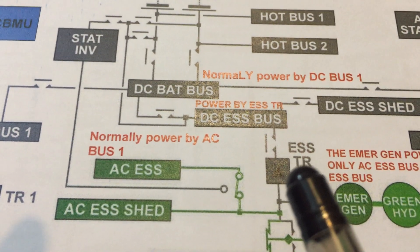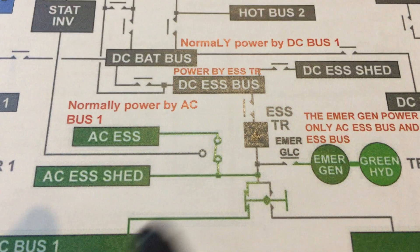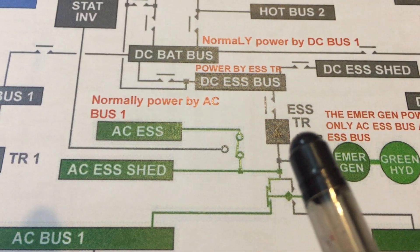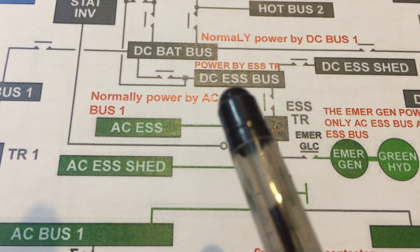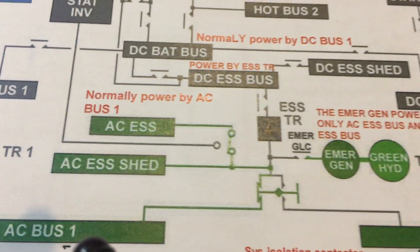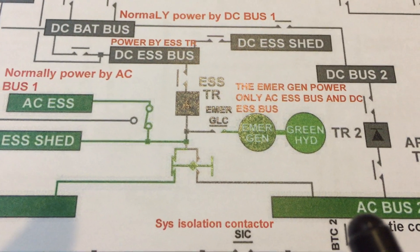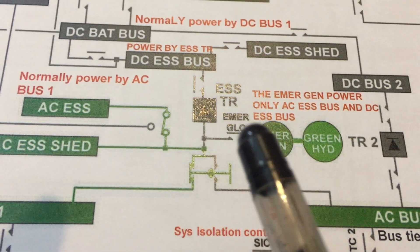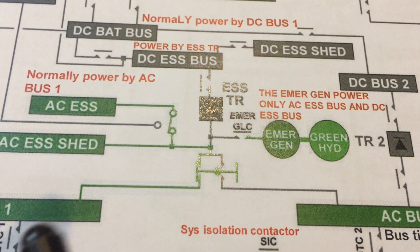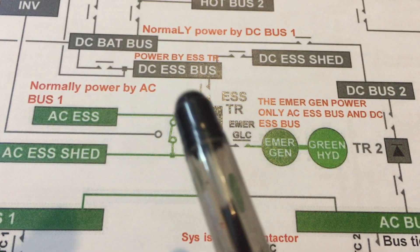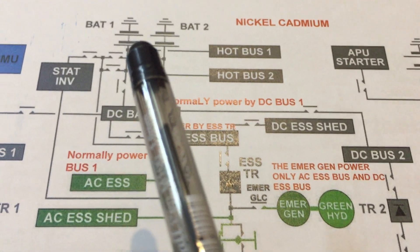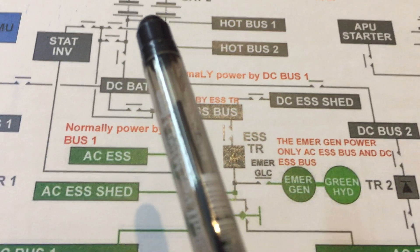We also have the DC essential bus. Normally the DC essential bus is powered by the essential TR, which in turn is powered by AC bus number one. If we lose DC bus number one, it can be powered by DC bus number two. If we lose both, the emergency generator can still power the DC essential bus. If all those sources are lost, the DC essential bus can be powered directly by battery number one or battery number two.